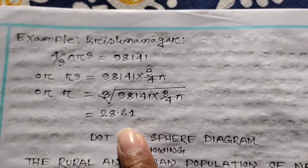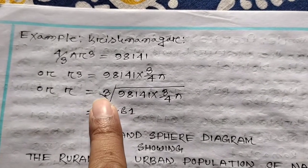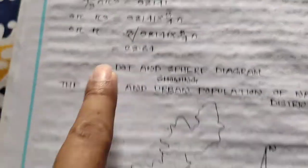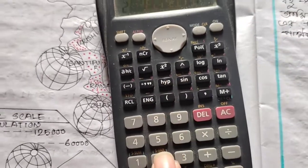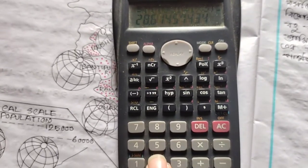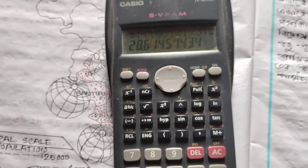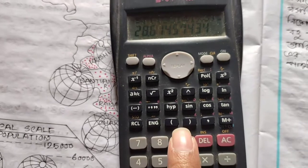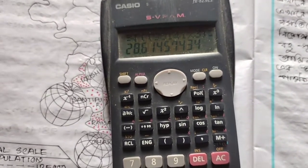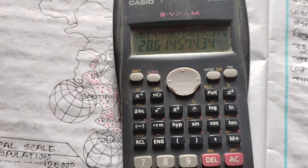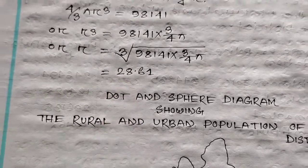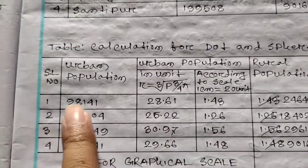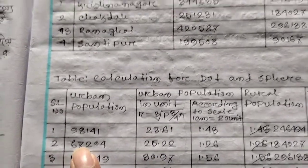We have to write this result. The next step: press shift and press cube root from the calculator. Then enter the next population value — 8, 8, 9, 8, 4, 9 — bracket close, divided by 4π, bracket close. This gives the next R1 value.